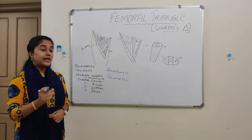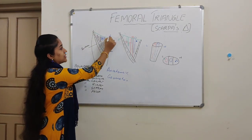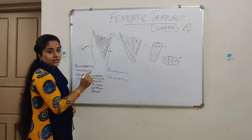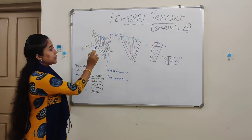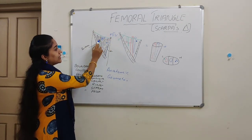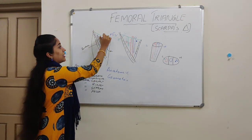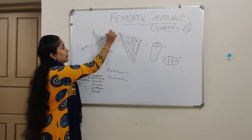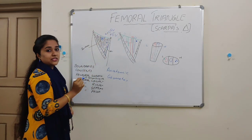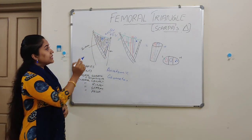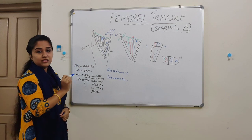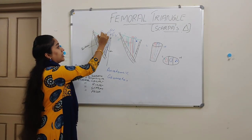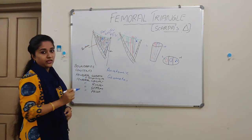In between the adductor longus and pectineus pass the profunda femoris vessels. In between the pectineus and the psoas major pass the medial circumflex femoral vessels, and in between the psoas and the iliacus pass the trunk of the femoral nerve.